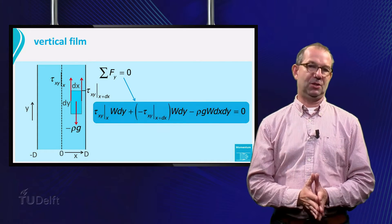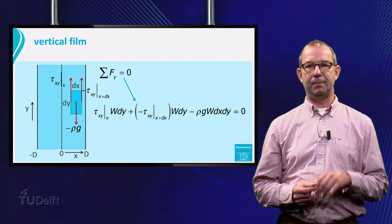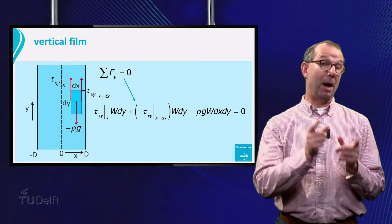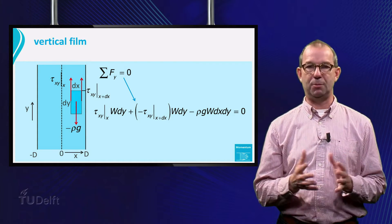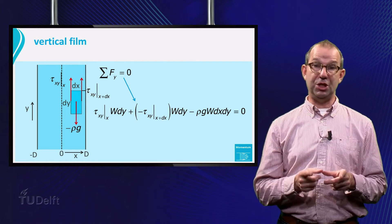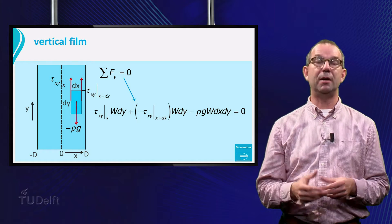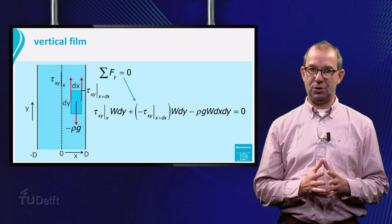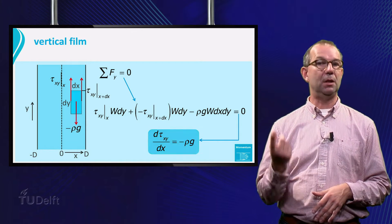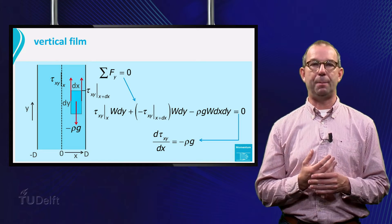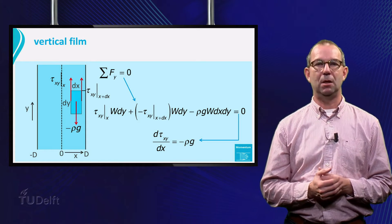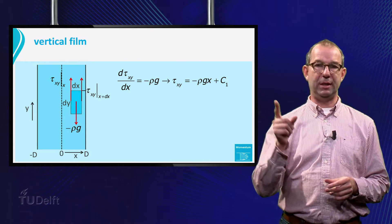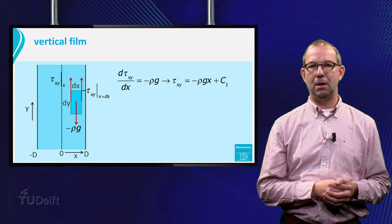Time to set up the force balance. Tau xy at x times w dy plus minus tau xy at x plus dx times w dy minus rho g w dx dy is zero. Divide by w dx dy and this can be turned into a differential equation for tau. d dx of tau sub xy is minus rho g. We can solve this equation easily and find that the shear stress decreases linearly with x.